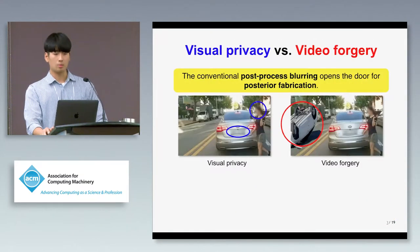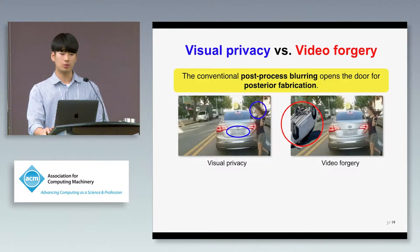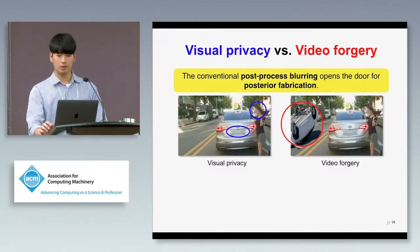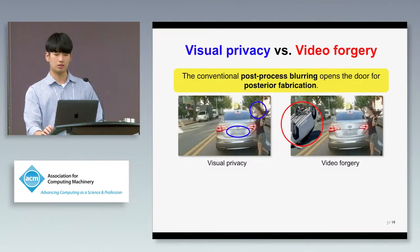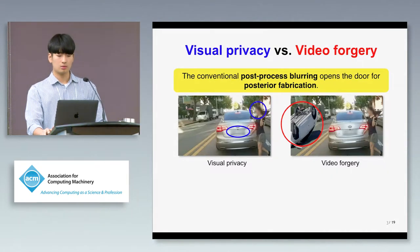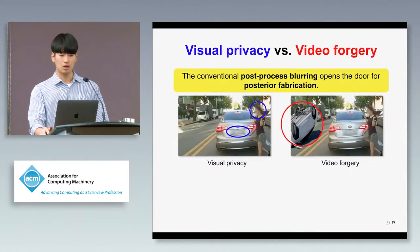One possible way to protect visual privacy is blurring. But protecting visual privacy without losing video authenticity is challenging. The conventional post-processing of videos to blur out contents will nullify their original signatures.